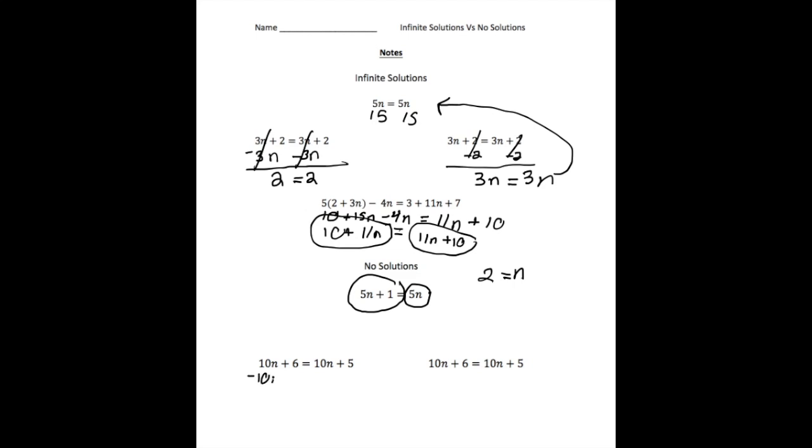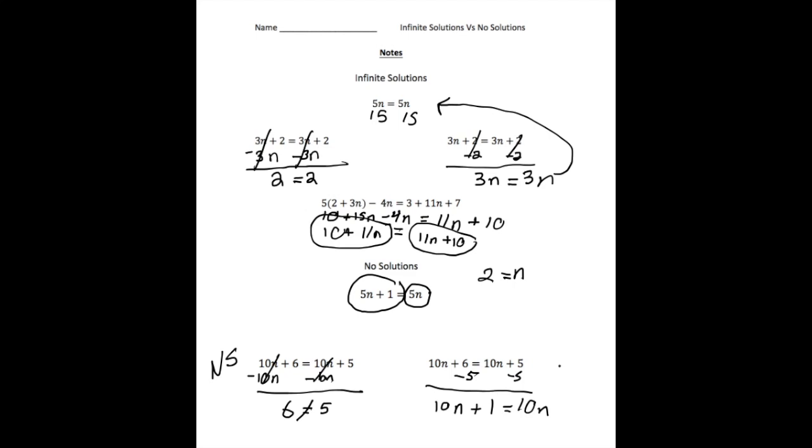When we try to solve this and take away 10n from both sides, these cancel out and now we get 6 equals 5. Because 6 does not equal 5, that's a false statement — so this has no solution. Similarly, if instead I take away 5 from both sides, we get 10n plus 1 equals 10n. No matter what we do, this expression is going to be one more than this expression, no matter what n equals. So this is another example of a no solution equation.